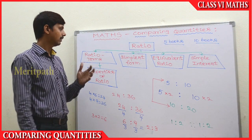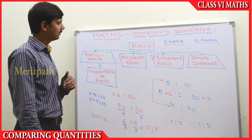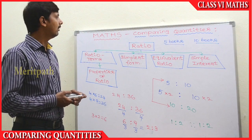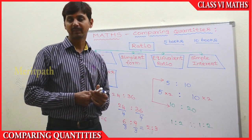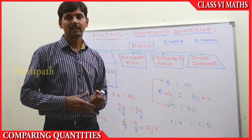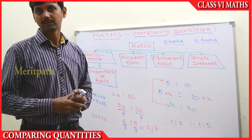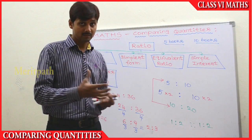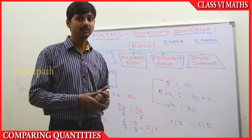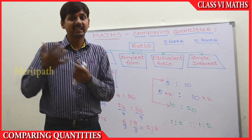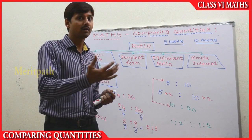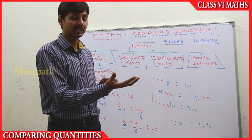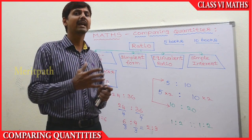So until now we have discussed ratio, its terms, its properties, the simplest form, and equivalent ratios. Now let's go to the next concept: simple interest. Earlier we discussed simple interest in previous classes. For example, if we take a loan of 10,000 rupees from the bank for one year, after one year we are going to pay back that 10,000. But we also need to pay some extra amount to the bank because we have taken the loan.